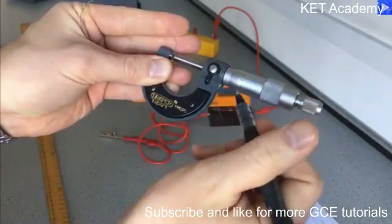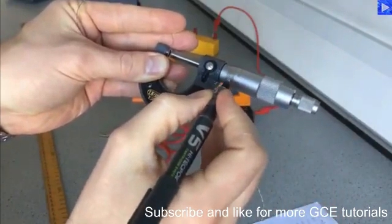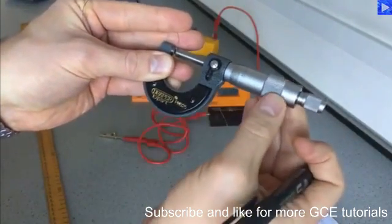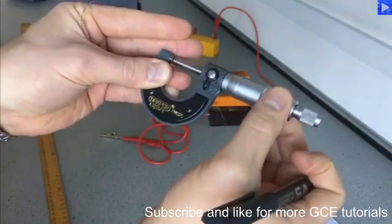And these, along the thimble, those are hundredths of a millimeter around there. And one revolution is half a millimeter so there is 50 hundredths there.